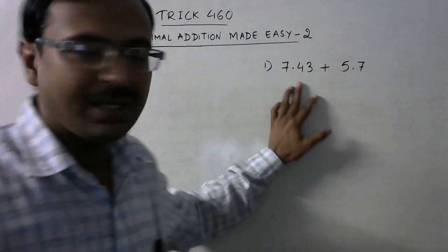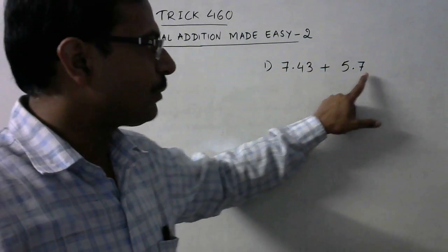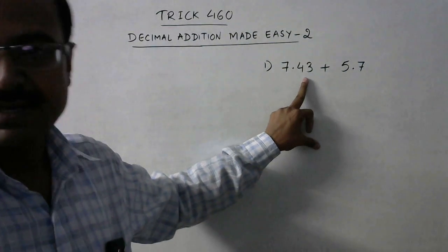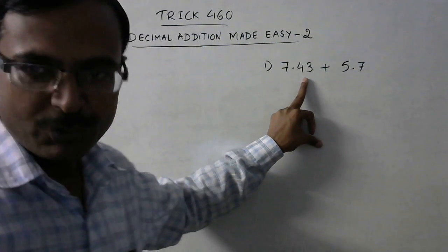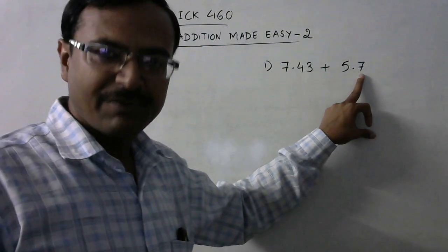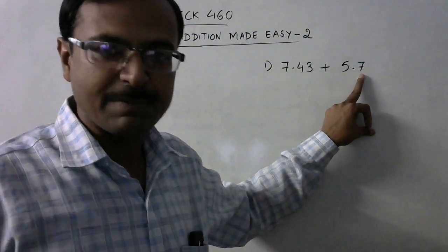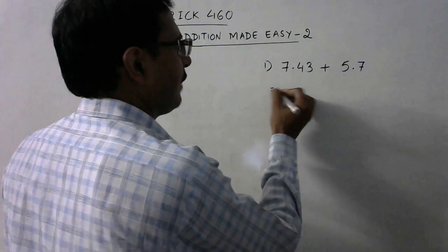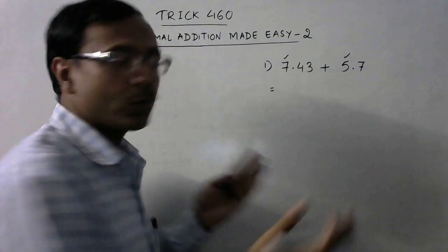Now see, in this number 7.43 we have two digits after the decimal place, that is 4 and 3, whereas in this number we have only one digit after the decimal place. So the trick is to first add the numbers which are before the decimal place.